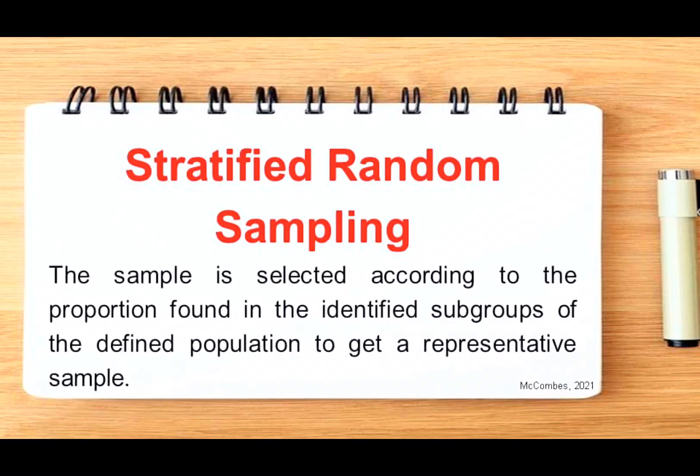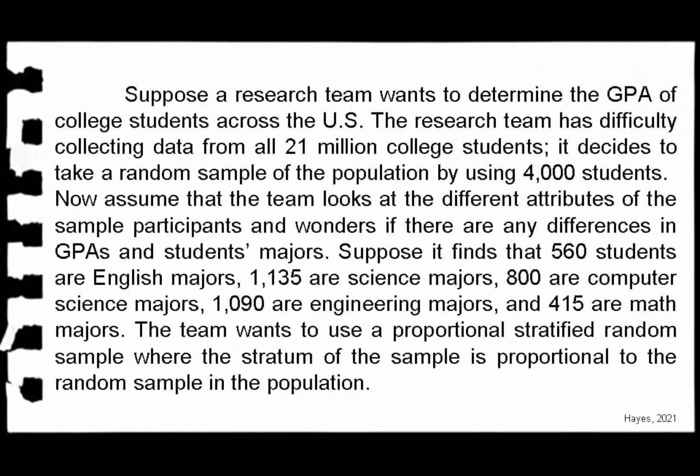Stratified random sampling: in this technique, the sample is selected according to the proportion found in the identified subgroups of the defined population to get a representative sample. The following is an example of stratified random sampling.